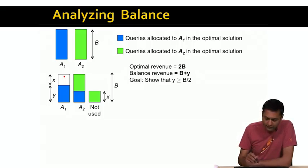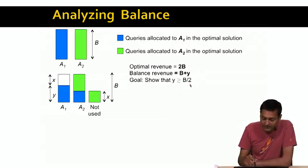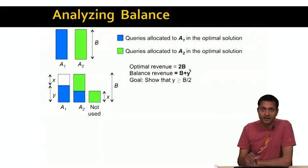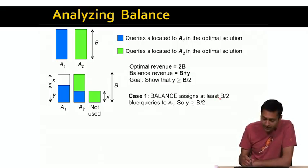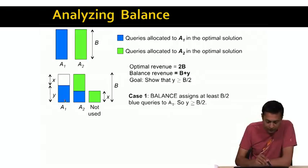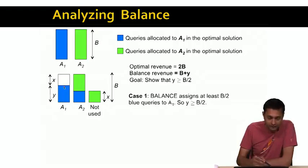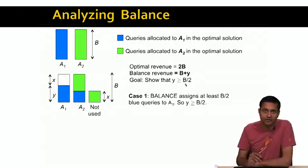The optimal revenue is 2B, and the balance revenue is B plus Y. What we're going to show is that Y is greater than or equal to B/2. Once we show that, we know the balance revenue is at least B plus B/2, which is three fourths of the optimal revenue. Let's consider two cases. Case one is when the balance algorithm assigns at least B/2 of the blue queries to A1. If that happens, then Y is at least B/2, which is exactly what we wanted to show.